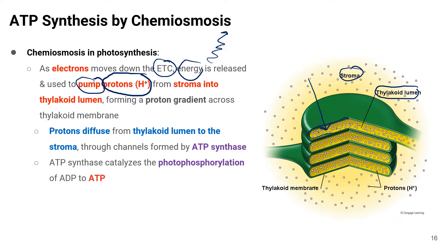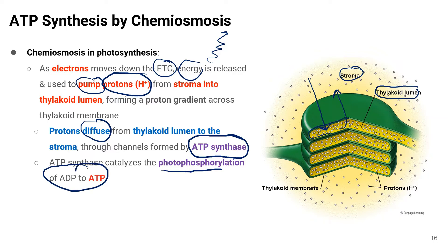After that, protons will diffuse from the thylakoid lumen back to the stroma. The word 'diffuse' tells us this is passive transport. However, the protons diffuse through an enzyme called ATP synthase, and this ATP synthase catalyzes the photophosphorylation of ADP to form ATP.